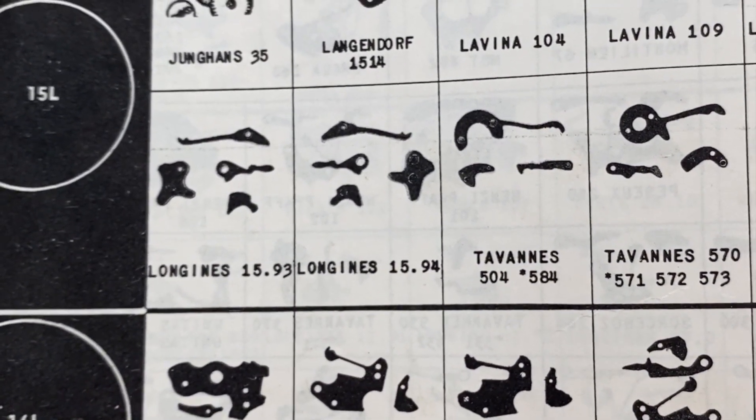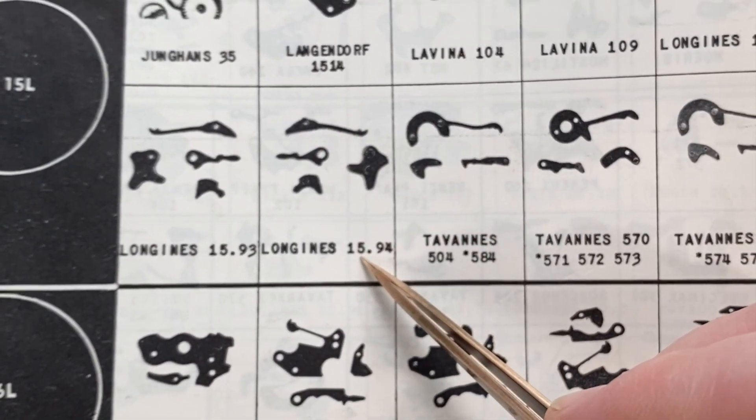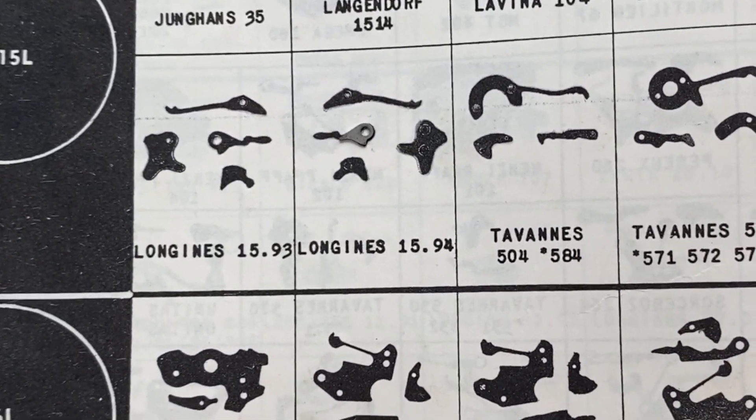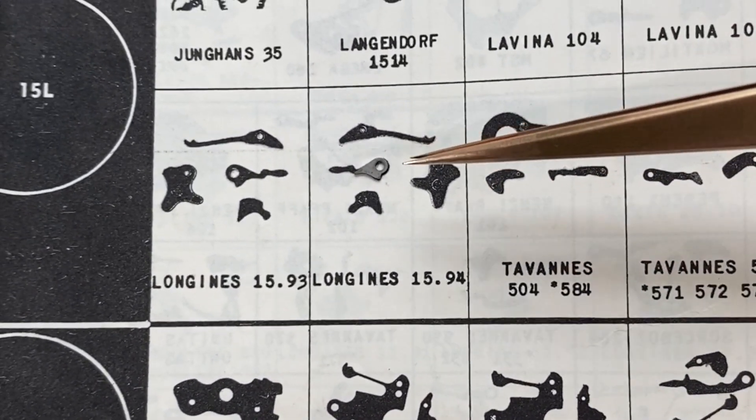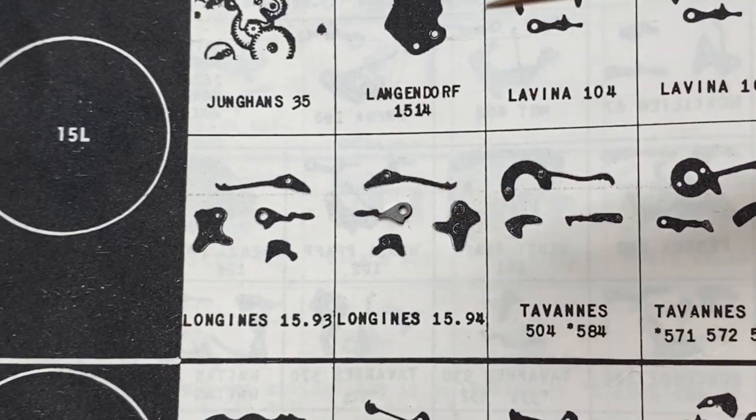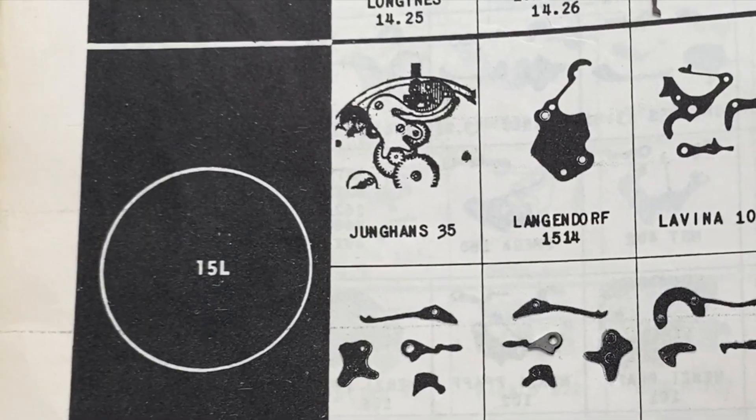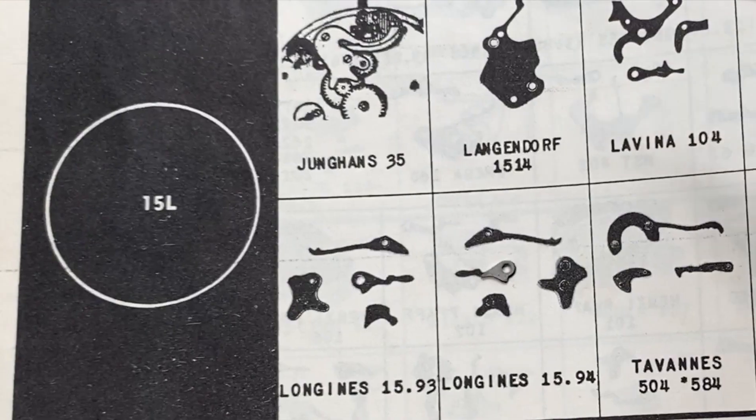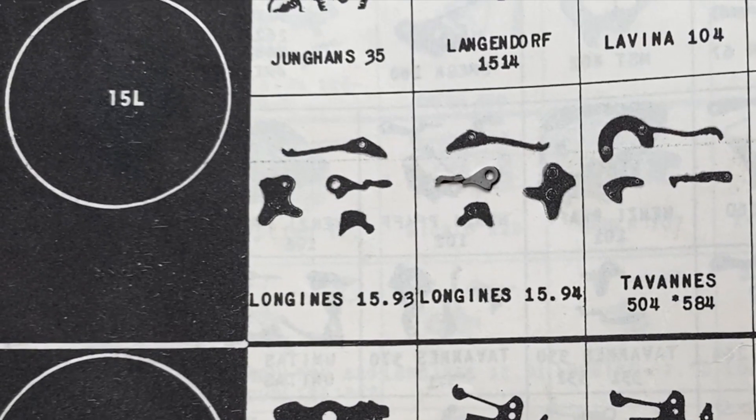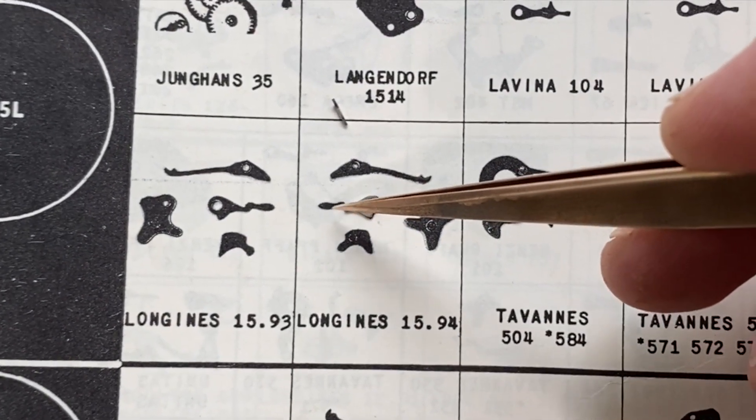We can see we have the best fit identification book here and we have our Longines 15.94. These are actually photocopies. This book is from the 60s, actually from the 50s I believe, and these are photocopies of actual components. This book is indispensable when it comes to vintage watch restoration. We can see that yes it is correct, that is the way that the original part sits on. But if we put our component on we can see that it doesn't follow at all. We can see that it cuts back and then comes off.